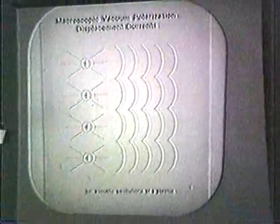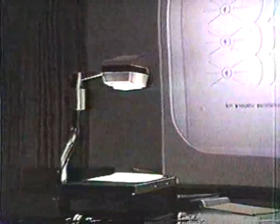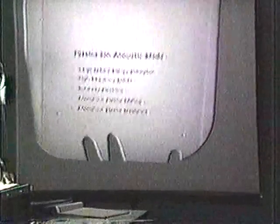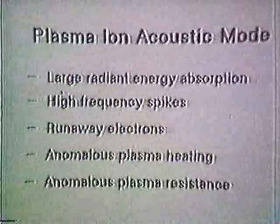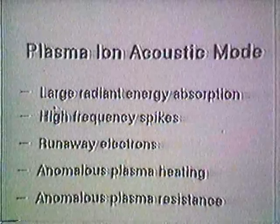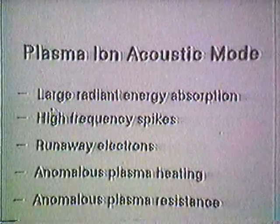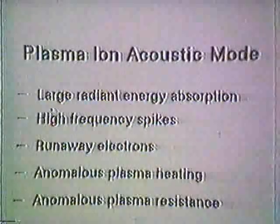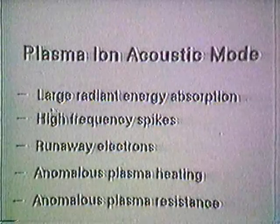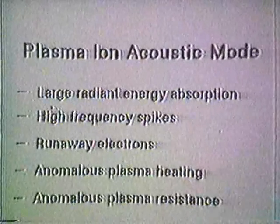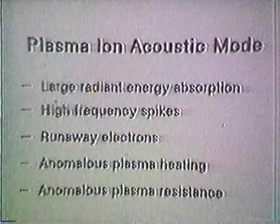I believe this principle is the key to the discoveries of T. Henry Moray. If we work with the ions in the tube, work with coronas and excite them at the ion acoustic mode — which is in the literature, called the ion acoustic mode, where the ions are undergoing the oscillations — things get really complicated in a plasma during this mode. They've observed experimentally a number of anomalies: large radiant energy absorption, big high-frequency spikes, runaway electrons, anomalous heating, and anomalous plasma resistance. I propose that the reason they are getting these anomalies is because they are directly interacting with the zero-point energy in a macroscopic way.